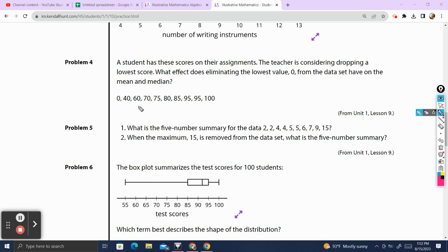So getting rid of zero, the mean is going to get bigger, because you're taking away a value that's very low. However, when you're calculating the median by crossing out the values and finding one that's in the middle, we're talking about the difference between 80. If we cross out the zero, the median is going to go somewhere between 75 and 80.